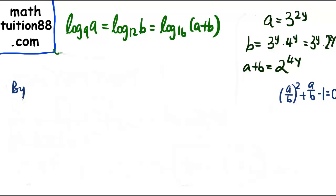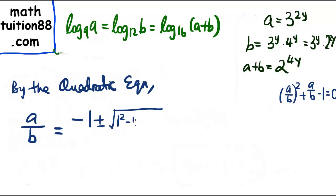So we are going to solve the quadratic equation. Hence, by the quadratic equation, a/b = (-1 ± √(1² - 4(1)(-1)))/(2(1)), which is (-1 ± √5)/2.